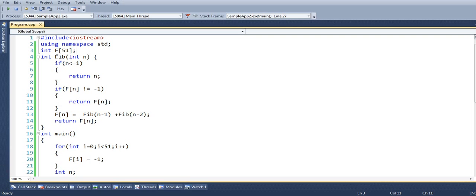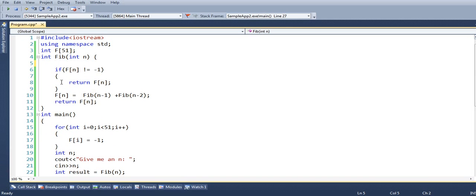We could also avoid writing this particular condition here. We could simply go ahead and in the main method, we could initialize F[0] as 0 and F[1] as 1. And this particular condition if F[n] not equal to minus one will take care of the previous condition that we have omitted or removed.